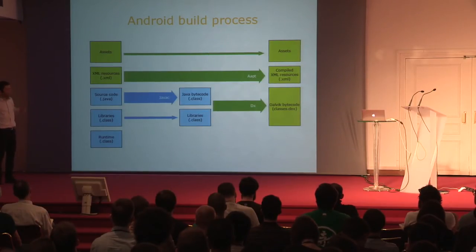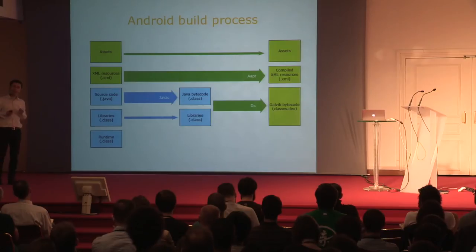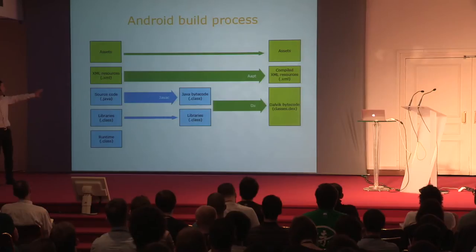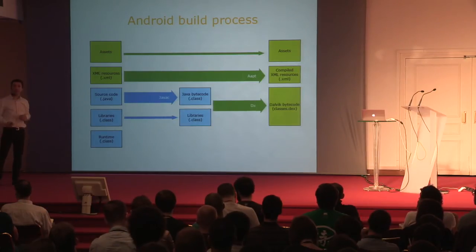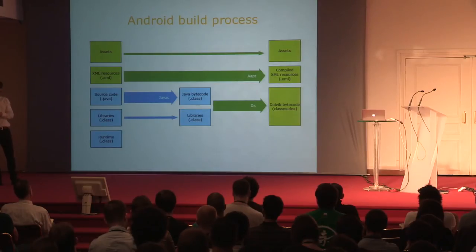One more observation: I've drawn the blue blocks as representing Java technology, so that's developed by Oracle. And the green blocks are Android-specific technology, so they have been developed by Google. In subsequent diagrams later in my presentation you'll see how that is shifting a little bit.